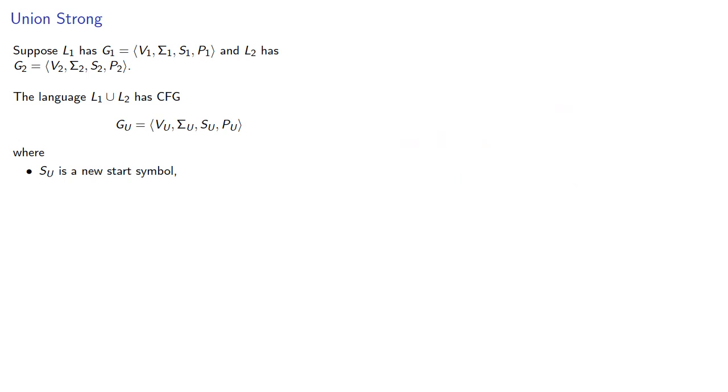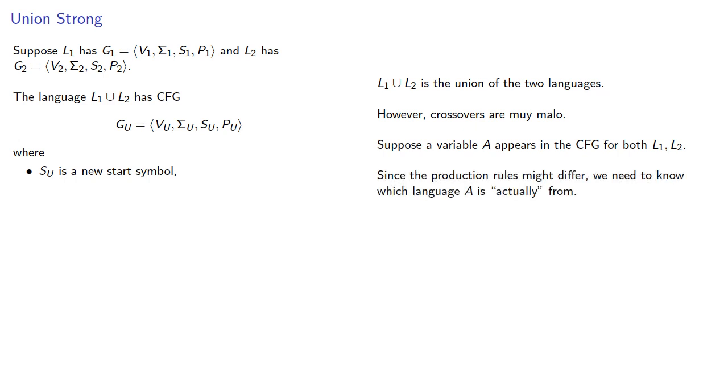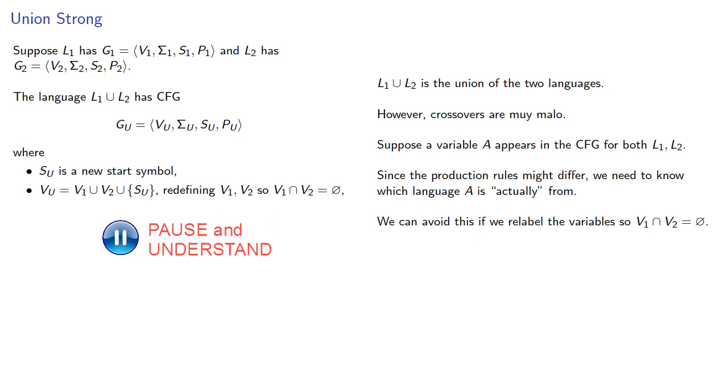Next, let's consider our variables. We want to be the union of the two languages. However, crossovers are muy malo. Suppose a variable A appears in the grammar for both L1 and L2. Since the production rules might differ, we need to know which language A is actually from. We can avoid this problem if we relabel the variables so that the variable sets are disjoint. This essentially prevents us from switching languages once we're in one of the two grammars.